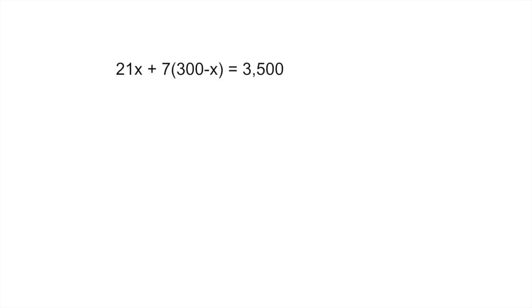Now that you have your equation set up, you would use the distributive property. So you would multiply 7 by all the items inside the parentheses and this gives you 21x + 2,100, because 7 times 300 is 2,100, minus 7x equals 3,500.